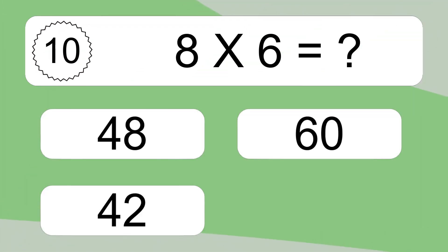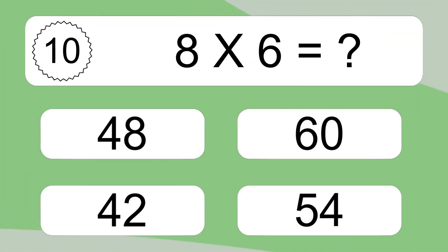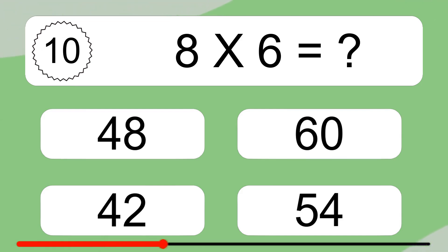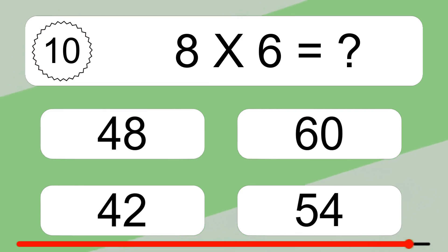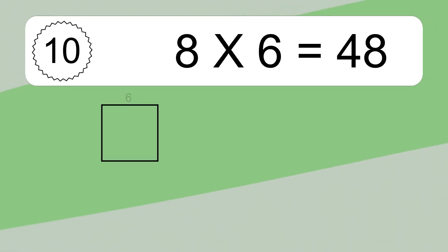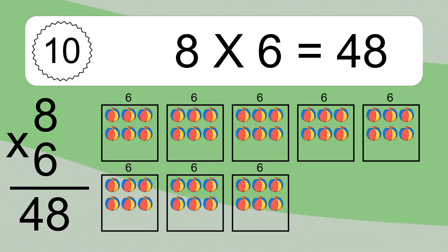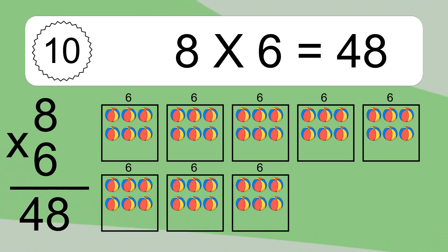8 times 6 equals what? 8 times 6 equals 48. We have 8 boxes, and each box has 6 colorful balls inside. If you count all the balls in all the boxes together, you will have 8 times 6 balls. This equals 48 balls.